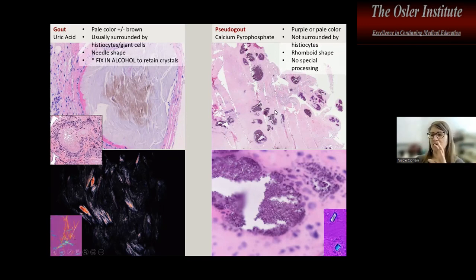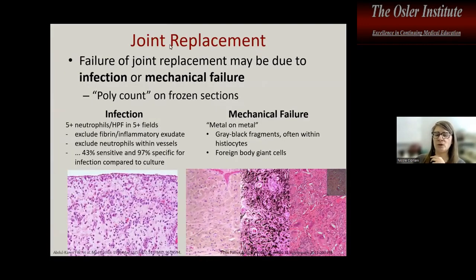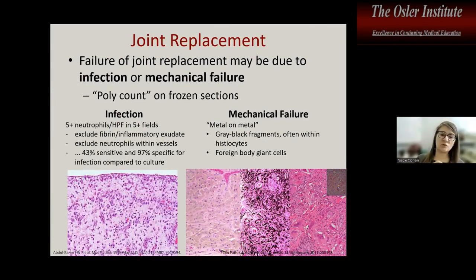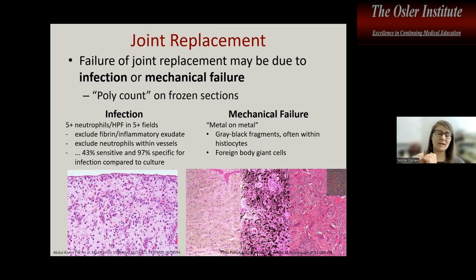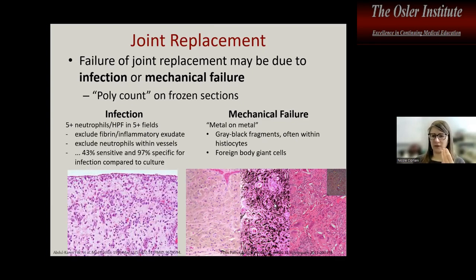Pseudogout doesn't have the same processing problem. Frozen sections in joints are performed for mechanical failure and loosening — sometimes due to true acute septic infection, but more often due to mechanical failure with metal debris rubbing into synovium. You'll see true neutrophils in infection versus metal debris in mechanical failure.